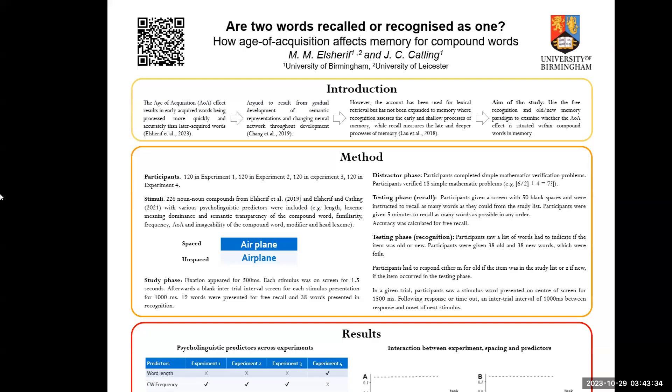Hello everyone, we're talking about are two words recalled or recognized as one. So we know that the age of acquisition is early-acquired words are recalled more quickly than late-acquired words. It's often to be the result of semantic representation and neural network changing over time. It's limited to lexical retrieval but has not been expanded to memory, so we're expanding it to memory. We have recognition for early and recall for measuring late-time stages.